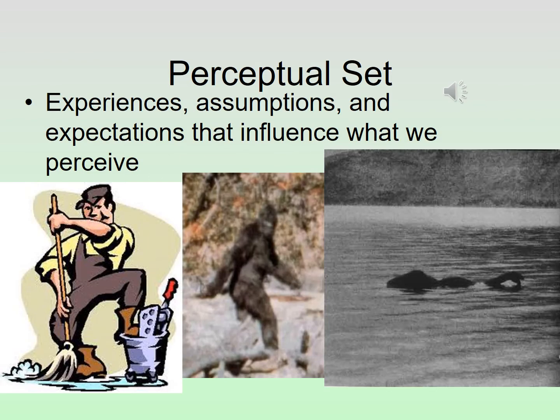We all interpret impulses very differently — our perception is very different from one another — and that's because of our background and things we've experienced. That's known as your perceptual set. Your background and life experiences cause you to perceive something very differently from someone else. For example, you might watch a TV show and really love it, like The Office, while other people watch the same show and don't care for it. They've interpreted it very differently based on their background.